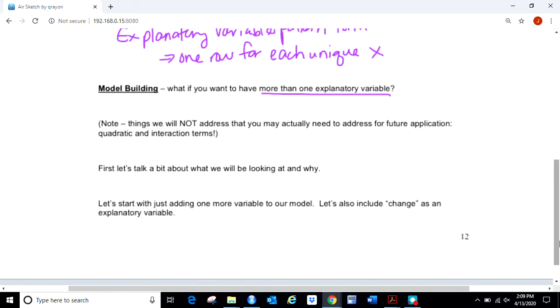We are going to look at having multiple explanatory variables. Things we will not investigate, because of the prerequisite for this course, is we're not going to take into account quadratic or interaction terms. If you've never heard those terms before, don't worry about them. For those who have, you know sometimes we need to include these additional terms for the best fit model. You can take those into account for logistic regression, we're just not doing that here.